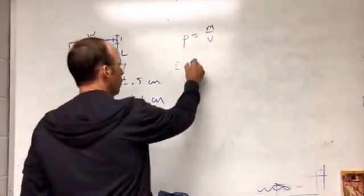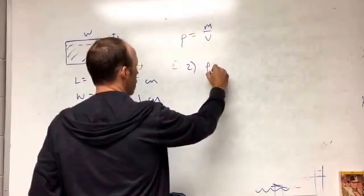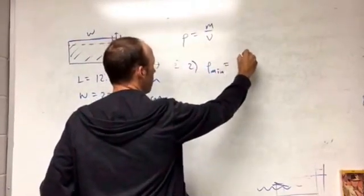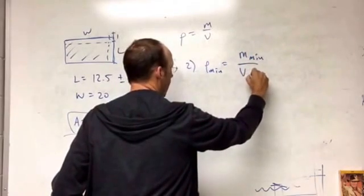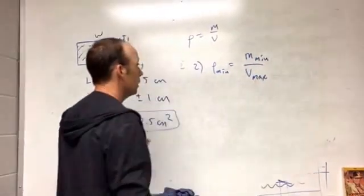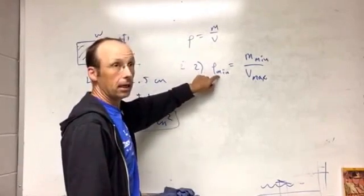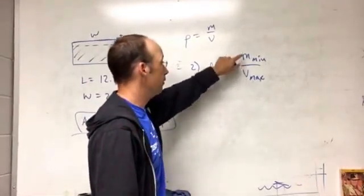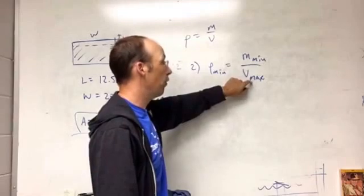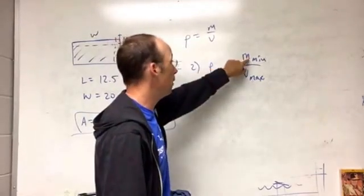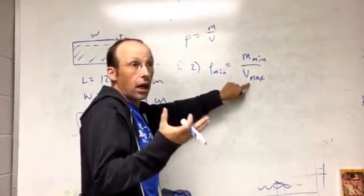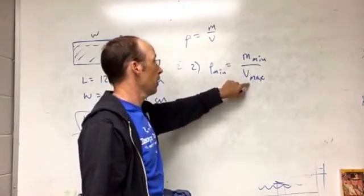For two, if I want to calculate the minimum density, that would be the minimum mass divided by the maximum volume, because I want the smallest this can be. Since I have volume on the bottom and I'm dividing by volume, a bigger volume would give me a smaller density. If you do minimum mass divided by minimum volume, you're kind of canceling those things out. So you don't want to put in the minimum values, you put in whatever needs to be in there to get the minimum.